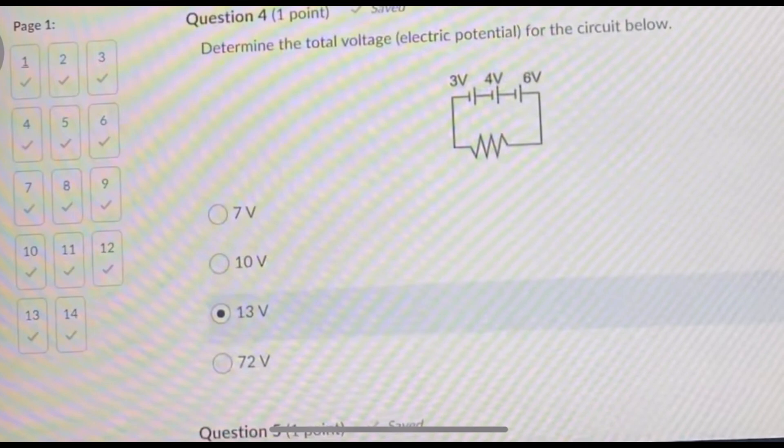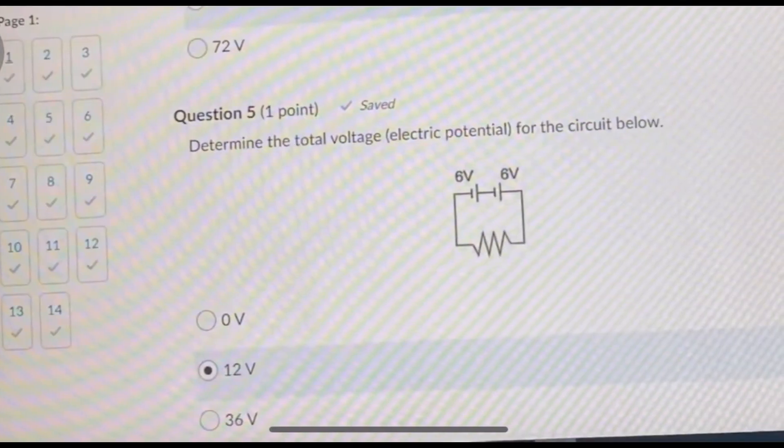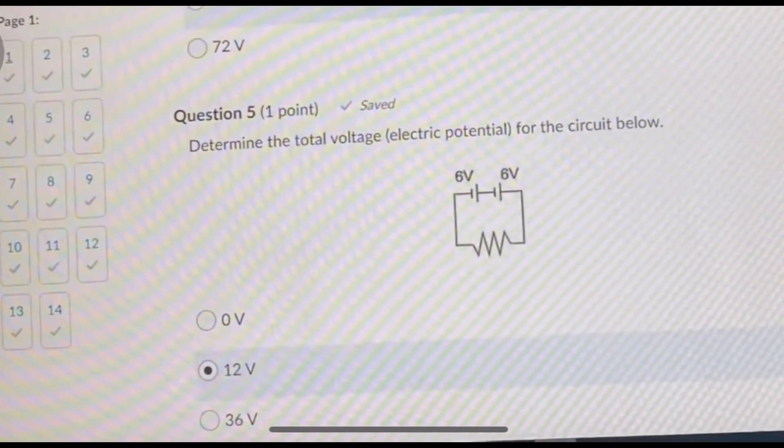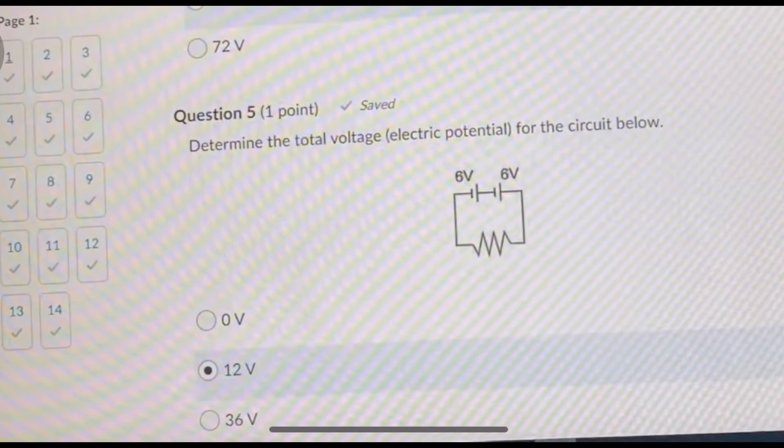Number four is asking you to determine the total voltage for the circuit below. Again, all you have to do is add to get your total. The first one is 3, then 4, then 6. If you add those together you get 13 volts. Number five, again with the total voltage, you only have two this time. So 6 plus 6 is 12.